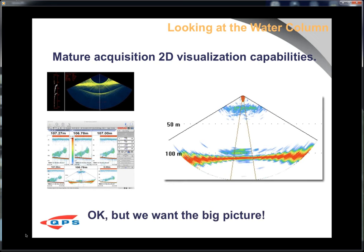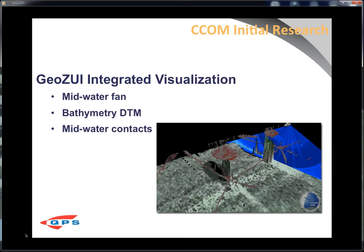The state of the top side for recording and acquiring water column data was mature. But most of the visualization for top side systems were 2D swath plots or long track plots. We wanted to have a bigger picture in how we integrate water column into the virtual environment. So we started working with the guys at CECOM at the University of New Hampshire. They were using GeoZooie to do integrated visualization and had come up with a couple of different metaphors in a 3D environment — a mid-water fan, exported 3D points, integrated with bathymetry and backscatter. It seemed like a really good starting point to take what they had done in research and commercialize that into a product everyone could use.